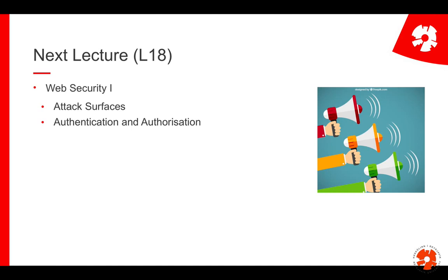We continue next lecture with web security, starting with a discussion of attack surfaces — what is possible and how attacks can happen to a web application. Then we discuss authentication and authorization, since everything we've programmed so far is open and everyone can access it. Lecture 19 will cover vulnerabilities and actual attacks to websites. Thank you for today.